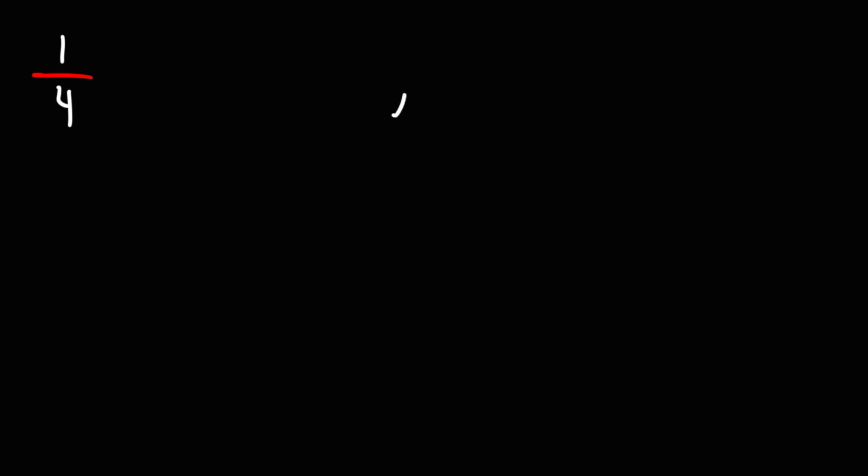To convert this fraction to a decimal, we need to divide. So the numerator is going to go on the inside — that's the dividend — and the divisor is going to be the denominator.